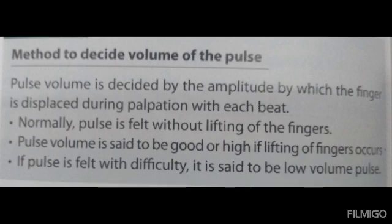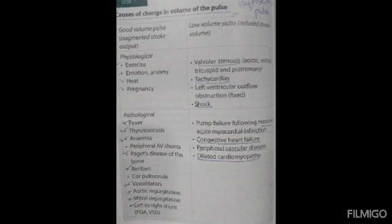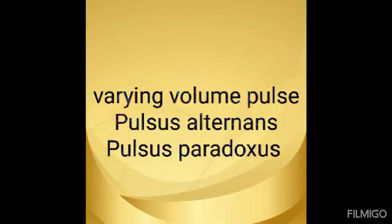If the fingers are lifted, there is high blood pressure or high pulse pressure. If the pulse is felt with difficulty, it is a low volume pulse. Good volume (hyperkinetic) pulse has physiological causes — exercise, emotion, anxiety, heat, pregnancy — and pathological causes — fever, thyrotoxicosis, anemia, beriberi, vasodilation, mitral regurgitation, and aortic regurgitation. Low volume (hypokinetic) pulse causes include tachycardia, shock, valvular stenosis, congestive heart failure, peripheral vascular disease, and dilated cardiomyopathy.